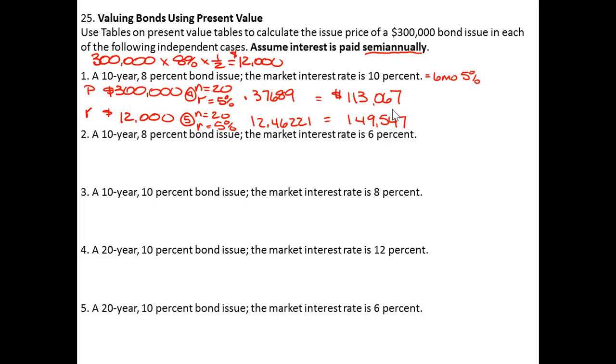Notice it says to round to the nearest dollar. So the bond price for this particular bond would be $262,614. That's its present value or that would be the cash proceeds you would get when you sold the $300,000 bond given those situations. Notice you add the present value of the principal and the present value of the interest together.